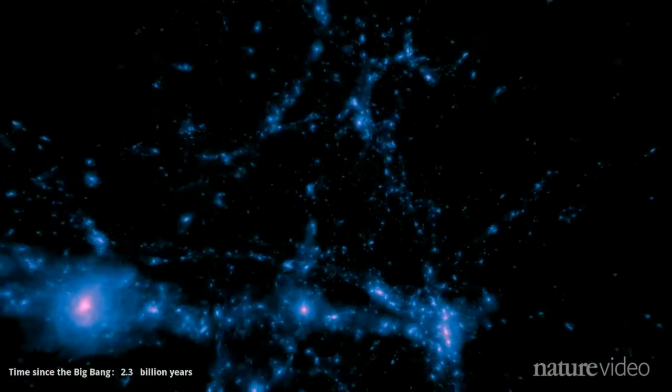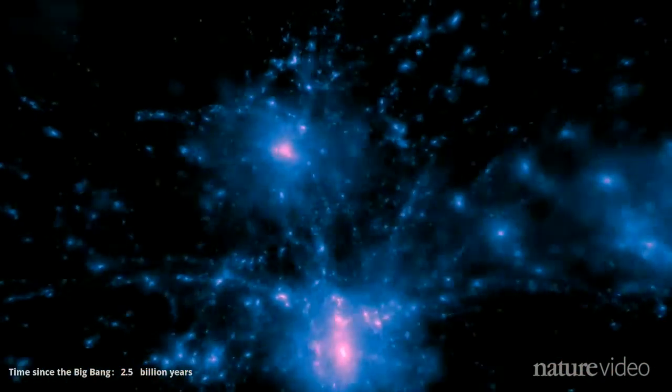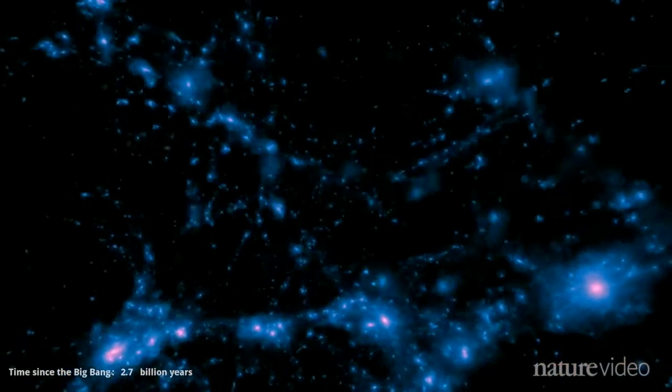Where dark matter is densest, shown as bright pink spots, ordinary matter also clumps and forms into galaxies.